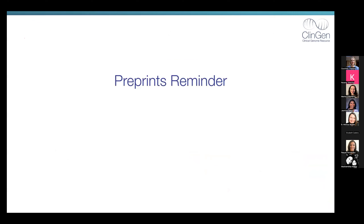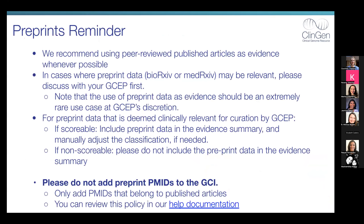As a preprints reminder — as Courtney mentioned — we really recommend using peer-reviewed published articles as evidence wherever possible. In cases where preprint data might be relevant, please discuss with your GCEP first. Preprint data is an extremely rare use case and is subject to GCEP discretion. If preprint data is deemed clinically relevant and scorable, mention it in the evidence summary and manually adjust the classification. If it's non-scorable, don't include it in the evidence summary. Please don't add preprint PMIDs to the GCI — only add PMIDs belonging to published articles. Review this policy in our help documentation.